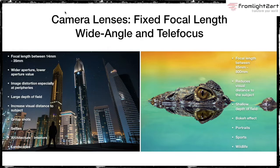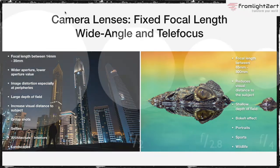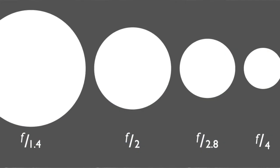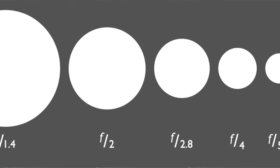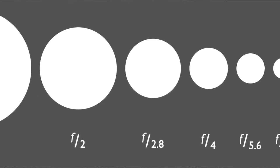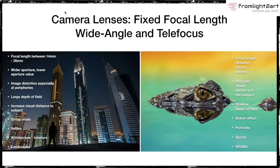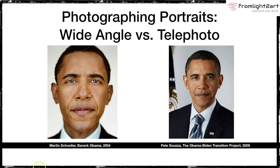The only problem with telephoto lenses is that the aperture tends to be a lot smaller — not as low in value — so you won't get a 2.8; you might only get a 4 or 5.6 aperture, meaning you need more light to come in and give you a proper exposure. In a classical sense, long lenses often produce better portraits.